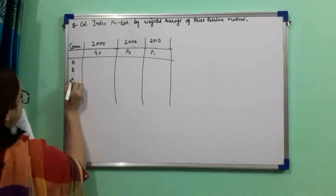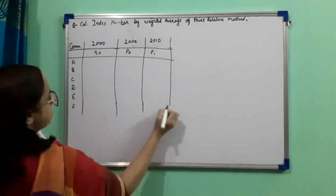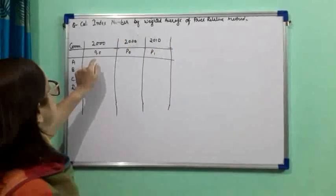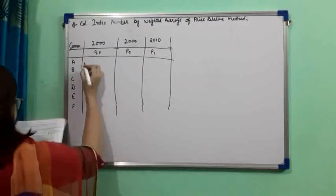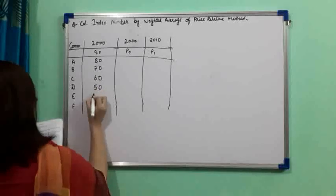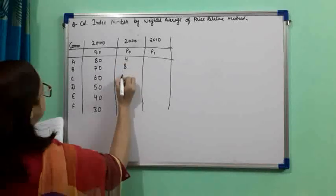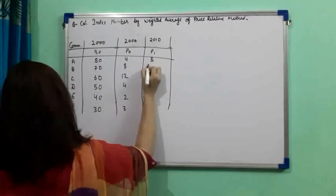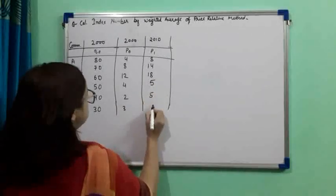The quantities for the base year Q0 are: 80, 70, 60, 50, 40, and 30. The base year prices P0 are: 4, 8, 12, 4, 2, and 3. The current year prices P1 are: 8, 14, 18, 5, 5, and 6. First, we calculate the price relative PR = P1/P0 × 100.